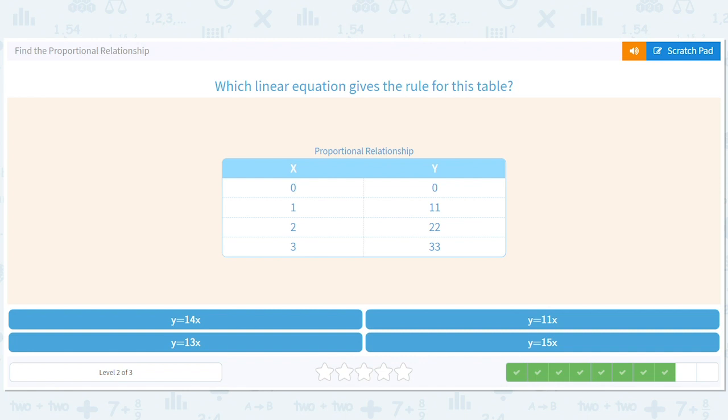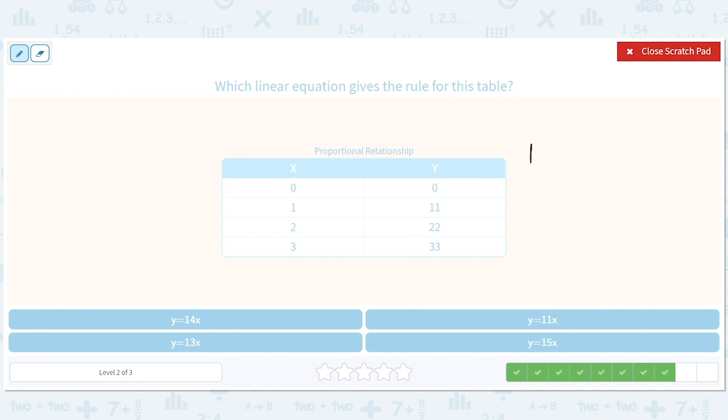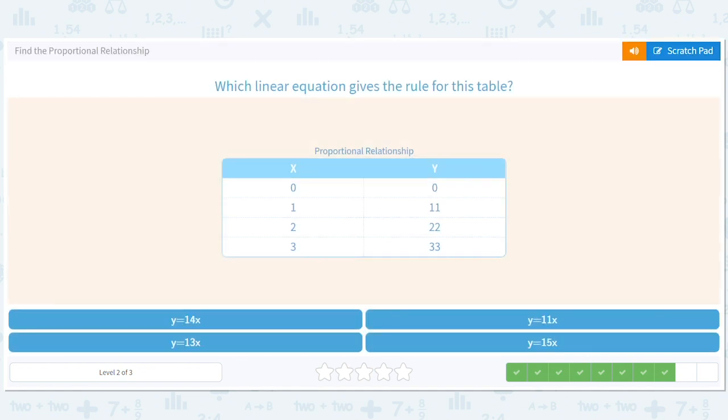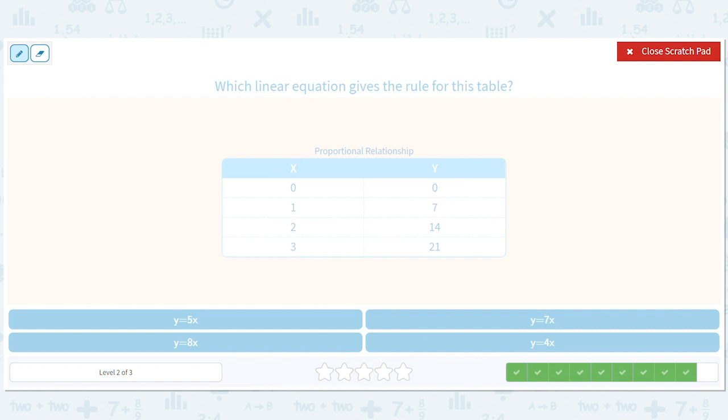If we look at 11 divided by 1, 22 divided by 2, 33 divided by 3, it goes up by 11 each time. These are all 11. So we get y equals 11x. And the last one here will be y equals 7x. You can see that. But let's do 7 divided by 1 equals 7. 14 divided by 2 equals 7. So it's just y equals 7x.